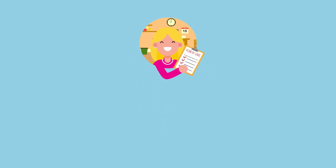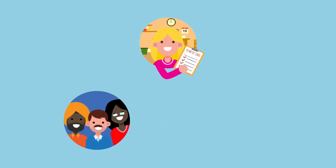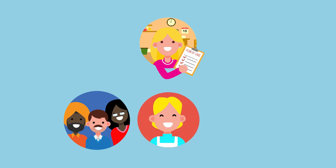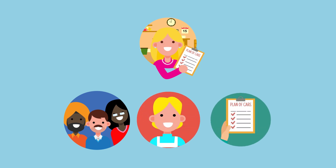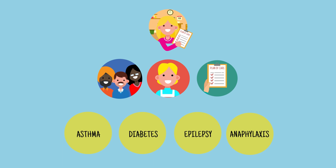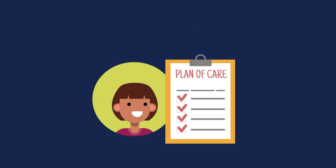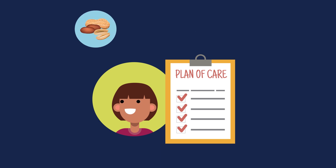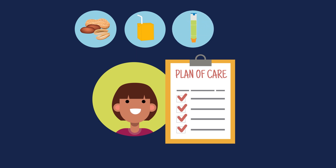With your permission, the Plan of Care is shared with school staff such as teachers, food services staff, and administrators. It includes information on routine or daily management, as well as medication or other supplies, including where they're kept. The Plan also covers what can lead to a medical incident or emergency, how medical incidents and emergencies can be prevented, what happens to the child when a medical incident or emergency occurs, and what should be done if there is a medical incident or emergency.